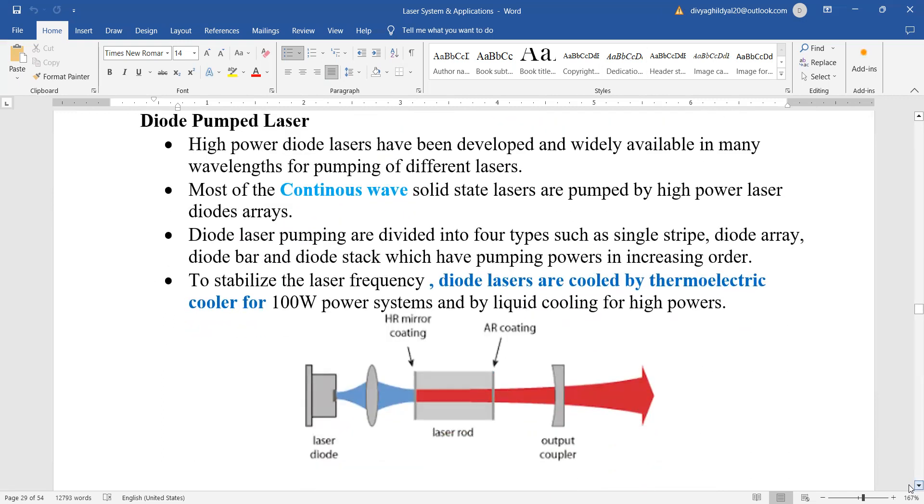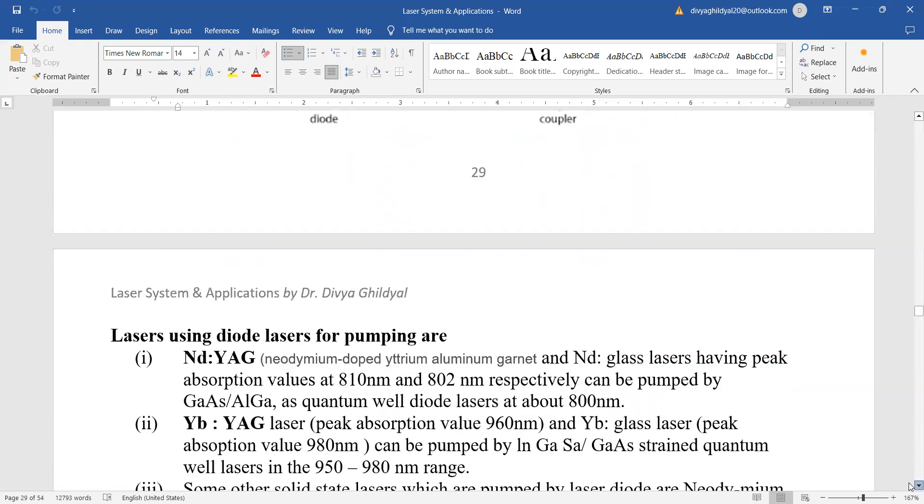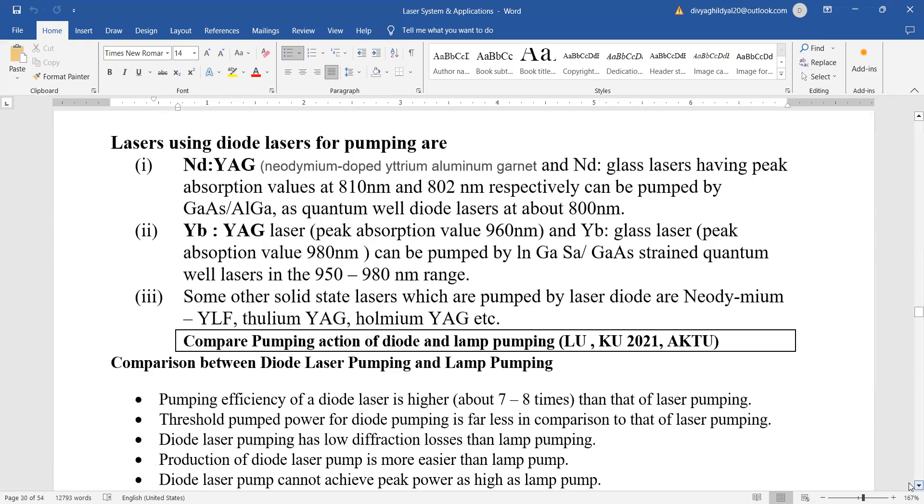Diode pumped lasers. Diode pumped lasers give a continuous wave output. They are pumped by high powered laser diodes. You can see here in this diagram and diode laser pumping is basically coming out in many forms. To stabilize the laser frequency, diode lasers are cooled by thermoelectric cooler and they do not really require a cooling system. Lasers using diode lasers are the neodymium doped yttrium aluminium garnet laser, the YAG laser, etc.